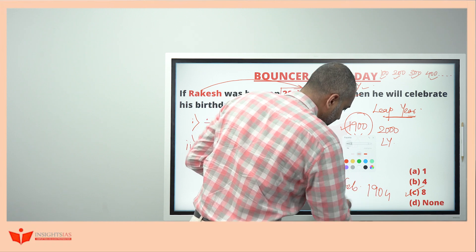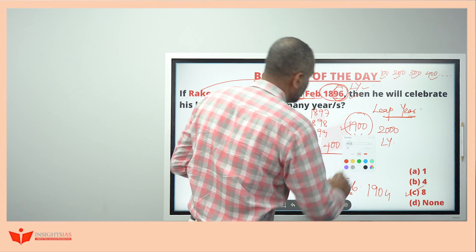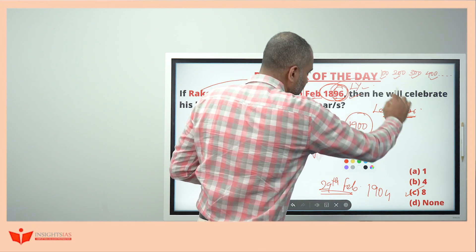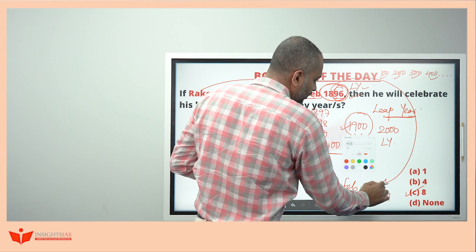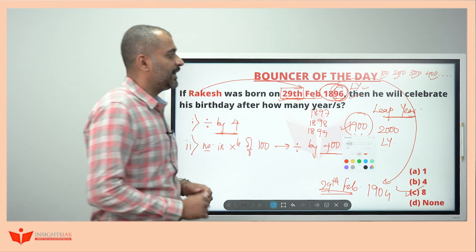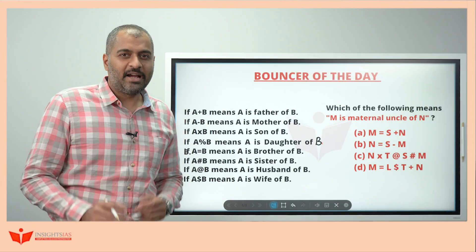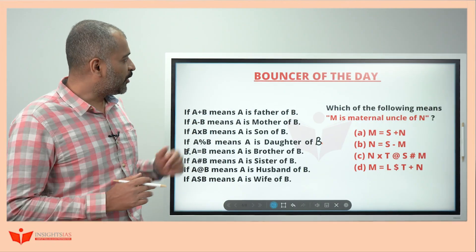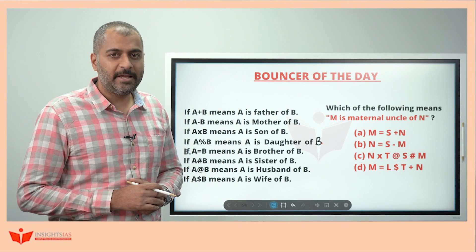He will celebrate his next birthday in 1904. So from 1896 to 1904, that is 8 years. And this is your bouncer question of the day.